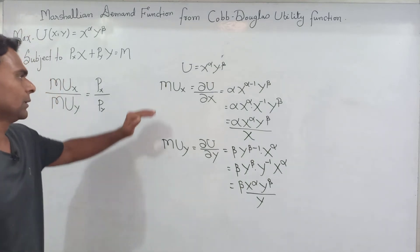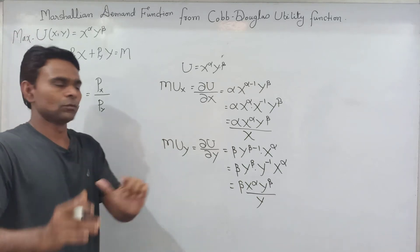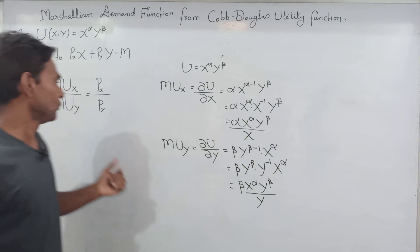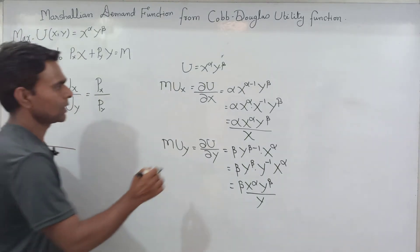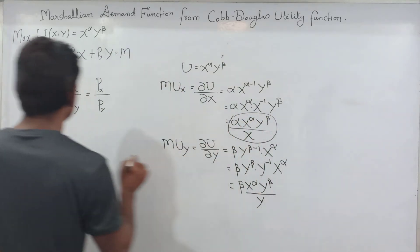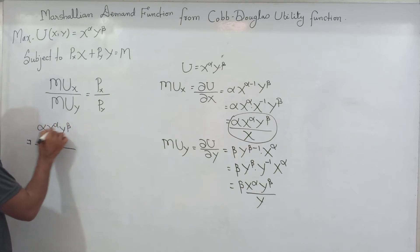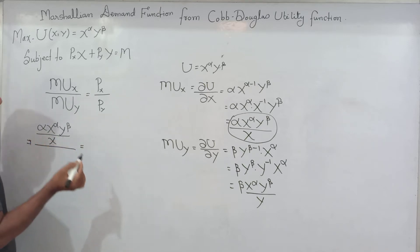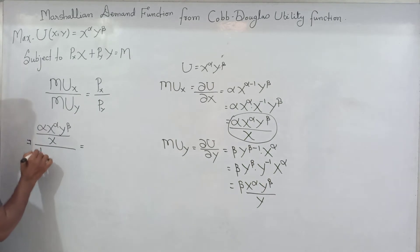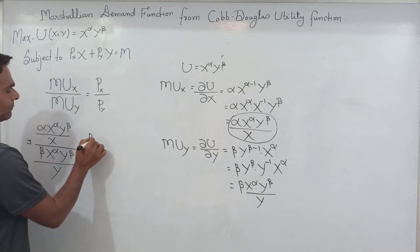So far we have calculated the marginal utility of x and y. We just need to substitute these two values into the ratio. The marginal utility of x is: alpha times x to the power alpha times y to the power beta divided by x. And the marginal utility of y is: beta times x to the power alpha times y to the power beta divided by y. This ratio equals the ratio of their prices.